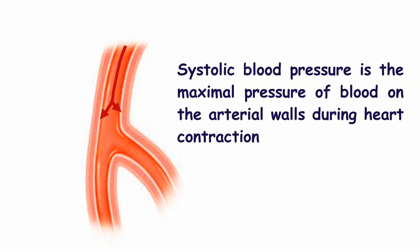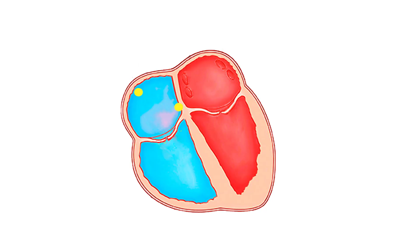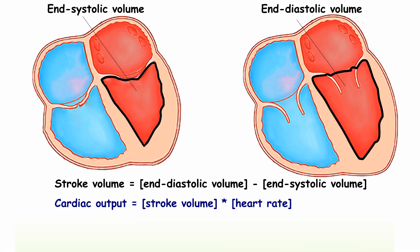Systolic blood pressure is the maximal pressure in the arteries at the moment of pushing the blood into the aorta during ventricular contractions. Systolic blood pressure mainly depends on the volume of blood ejected into the aorta — the stroke volume — and it also depends on heart rate. The heart rate is the number of heartbeats per minute, also defined as the speed at which the heart beats.